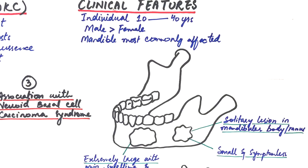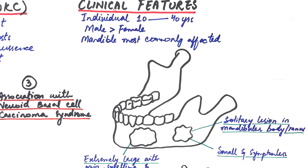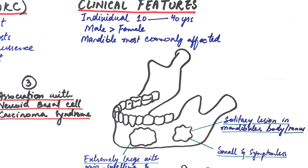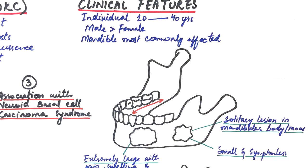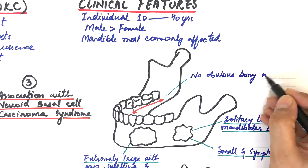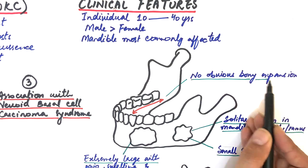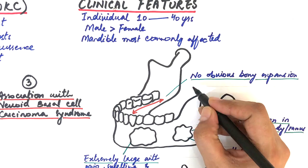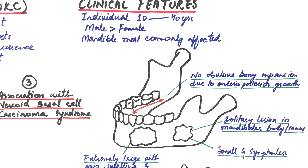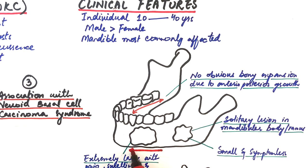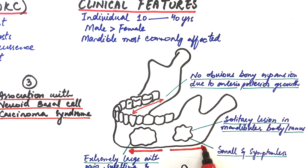Since the cyst grows in an anterior-posterior direction within the medullary cavity of the bone, therefore, in most of the cases, it does not show any obvious bony expansion. This type of cystic growth is most often seen when the cysts are located within the angle of the mandible, hence growing in two directions: anteriorly towards the body and posteriorly towards the ramus as well.